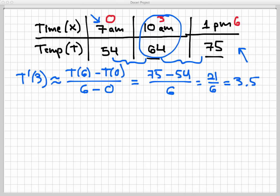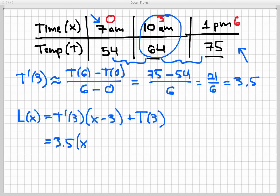Now let's copy over the formula for the linearization at x equals 3. That was T'(3) times (x - 3) plus T(3). And now we can specify every part of this function except the x. The T'(3) is 3.5. The x is a variable, we leave it alone. And then the T(3) is just the temperature at time equals 3, and that's 64.